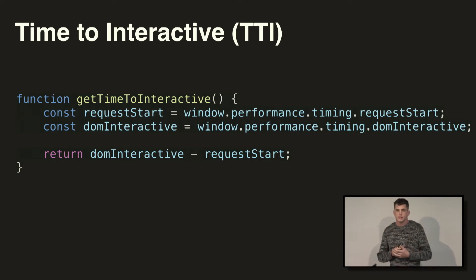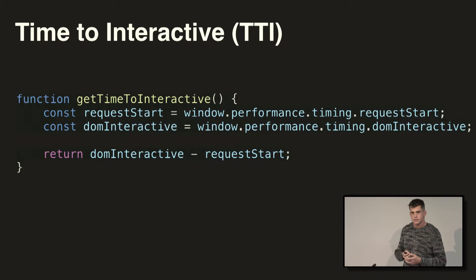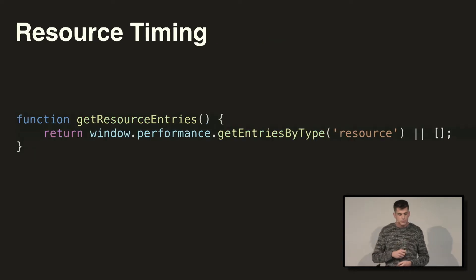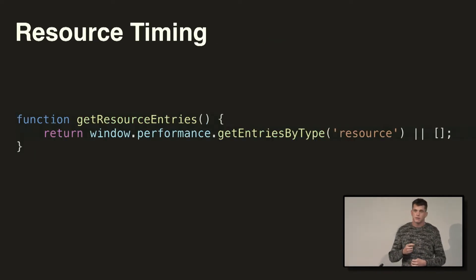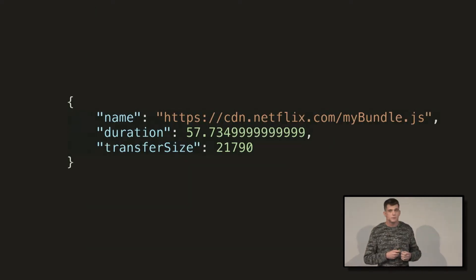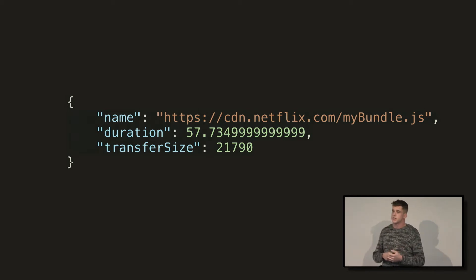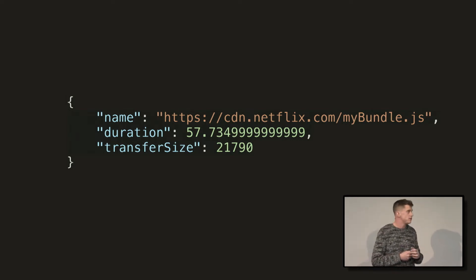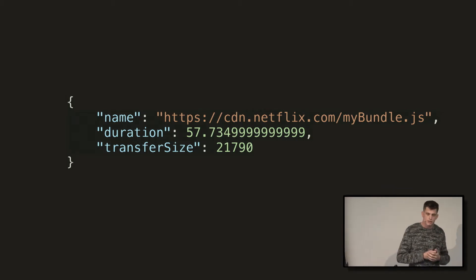Just like we can use the Performance API to instrument the page itself, we can also use it to see how the page's resources are performing. A resource is anything like a JavaScript file, an image, CSS, stuff like that. This function will return an array of objects which are resource entries. We have three things: name, which is the URL of the resource; duration in milliseconds, which is how long it took the browser to load the resource; and transfer size in bytes, which is the size of the resource as it goes over the wire. This is important and I'll come back to it in a bit.